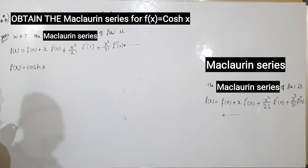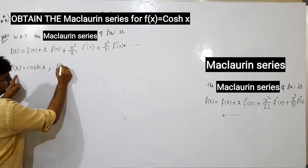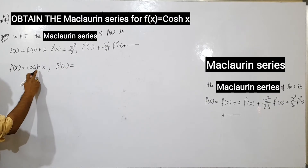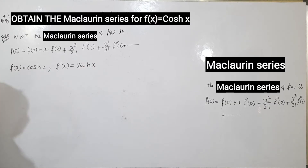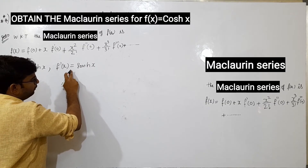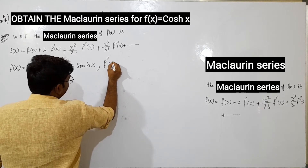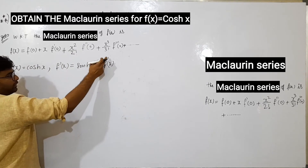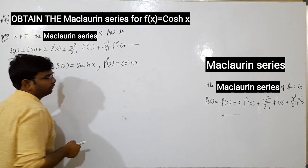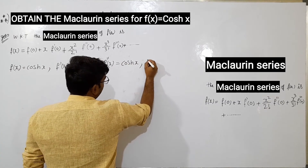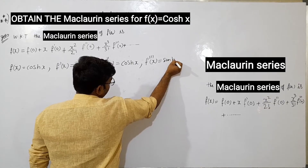Now, taking the derivatives: f(x) = cosh(x), so f'(x) = sinh(x). Then f''(x) is the next derivation — f''(0) value: substituting zero gives cosh(0) = 1.